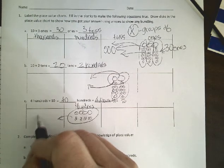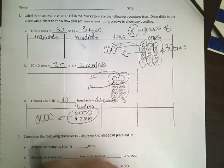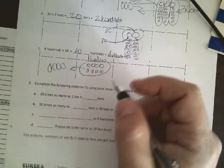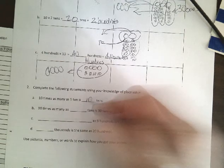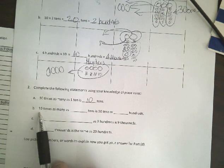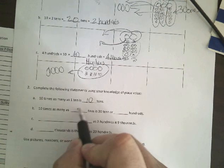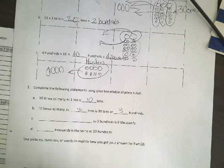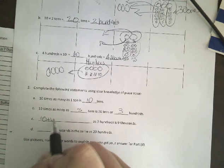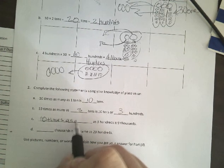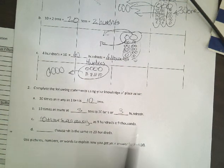Alright, 10 times as many as 1 ten is 10 tens. 10 times 10 tens is still 10 tens. 10 times as many as 3 tens is 30 tens or 3 hundreds. 10 times as many as 900 is 9,000.